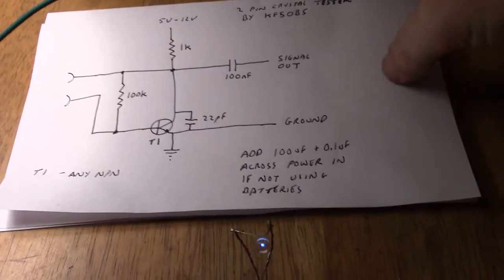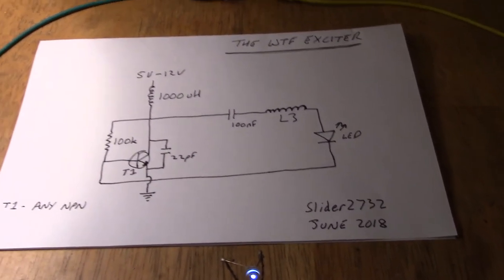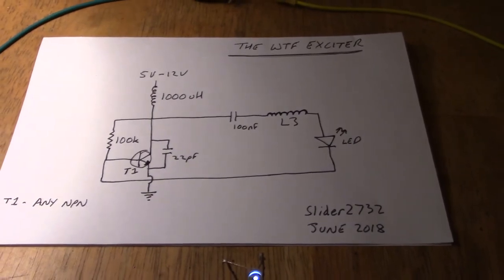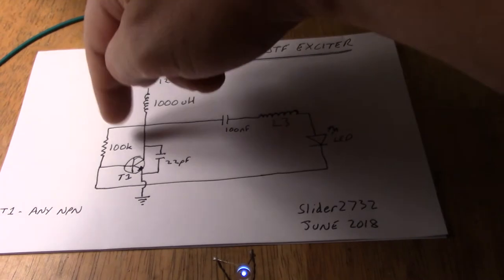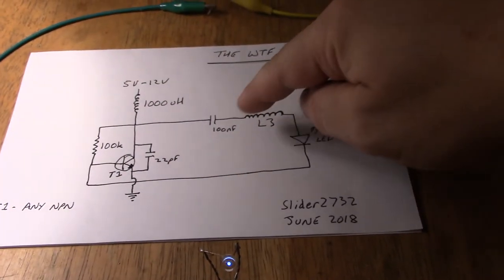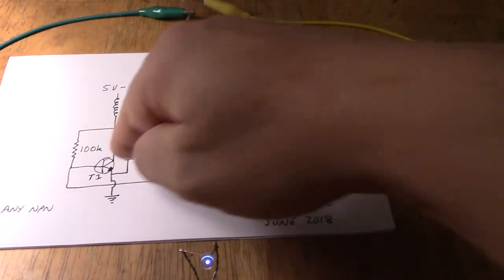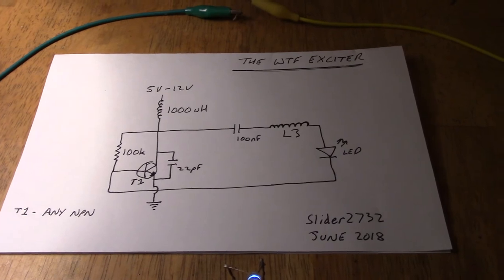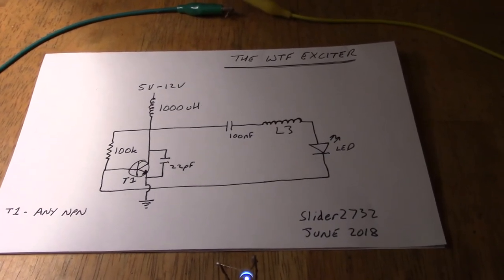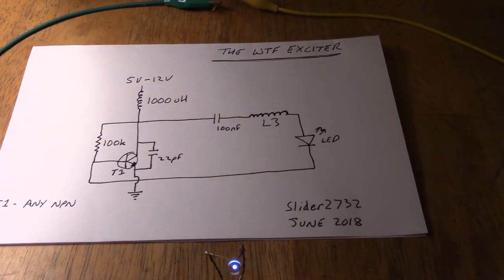So I've decided we'll have to consider this the WTF exciter, and this is the circuit now for it. We've got the 1000μH there which used to be a 1k. We've got no crystal on the sides here. We've got the L3 connected to the output, and then the LED comes back around to the base. So as I say, I think that's what it'll have to be called - the WTF exciter. Incredibly simple thing. I suppose it's got an L1 and L2, but there we are.